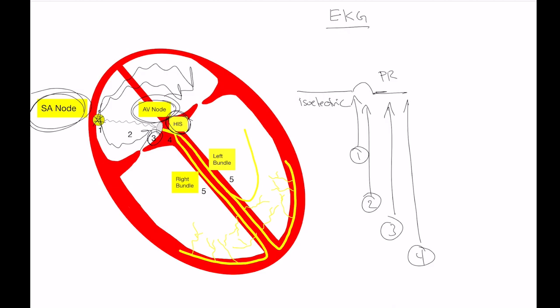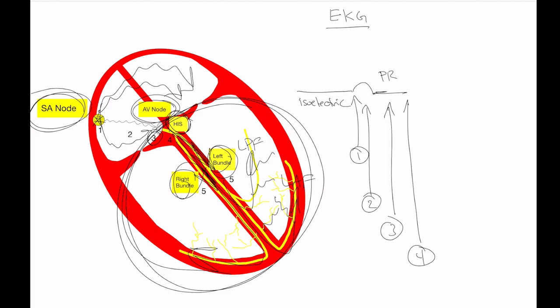So once conduction leaves the His, it's going to enter down into the rapidly conducting bundle branches through the ventricular septum. And this is the left bundle and the right bundle. Now the left bundle is divided into the posterior fascicle, left posterior fascicle and the left anterior fascicle. And these are all kind of fast conducting highways and signals are going to be going down rapidly into these little Purkinje fibers, which are also kind of specialized rapidly conducting tissue. The same time conduction is going to be doing the right bundle. Depolarizing the right ventricle. The idea is to get a uniform simultaneous depolarization of the heart in unison. And that's what's going to be giving us our QRS complex.